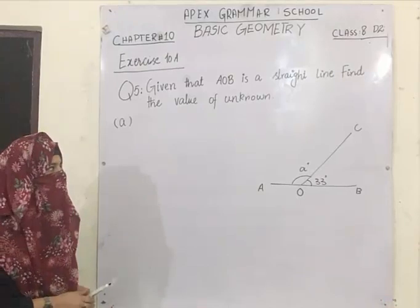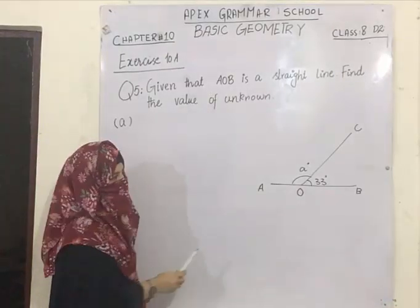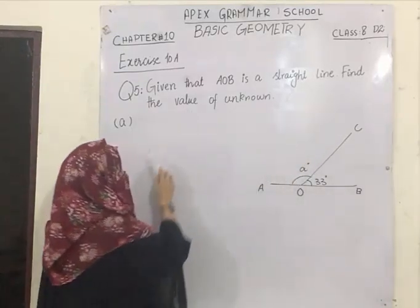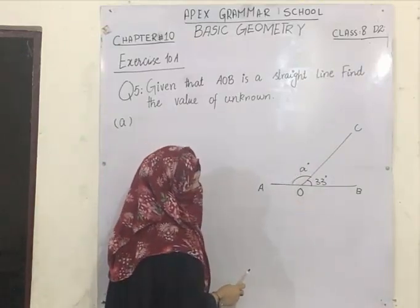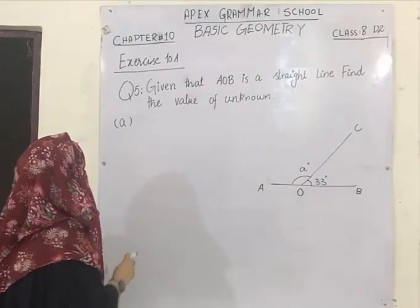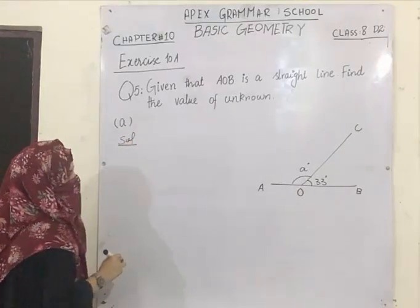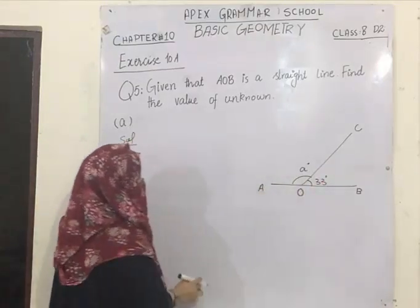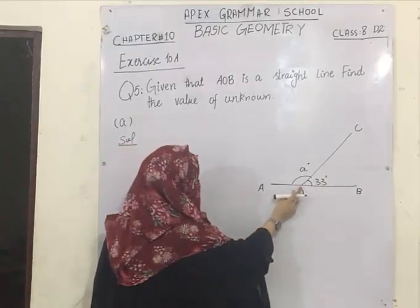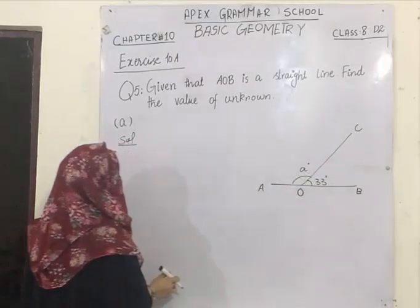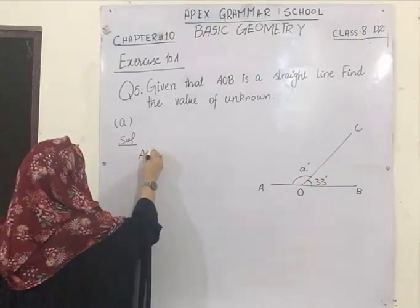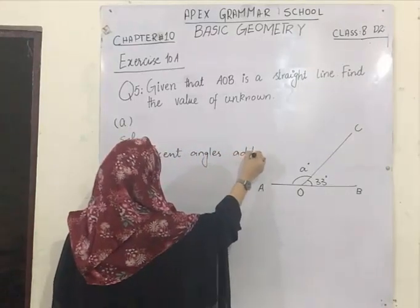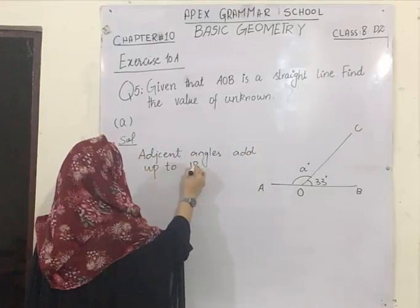Going towards question number 5. In question number 5, you are given that AOB is a straight line. As you can see in the diagram, AOB is a straight line and you have to find the value of the unknown, which is 'a'. Remember that you have to make the diagrams in your notebook as well. You can see that 'a' and 33 are adjacent angles because they are lying on a straight line, sharing a common vertex and a common side between them.